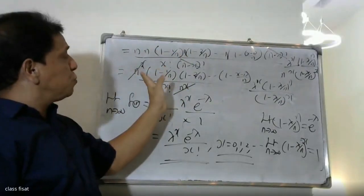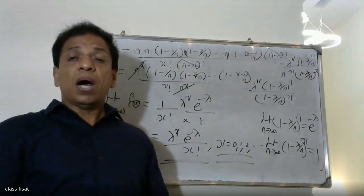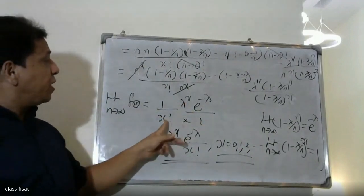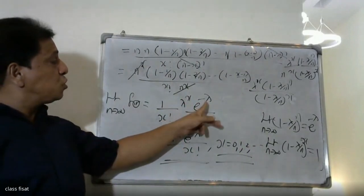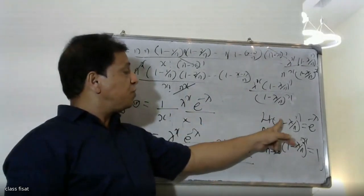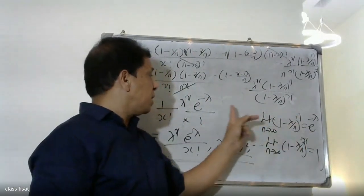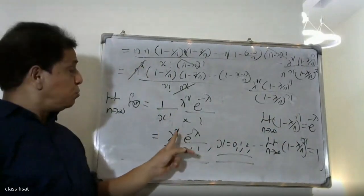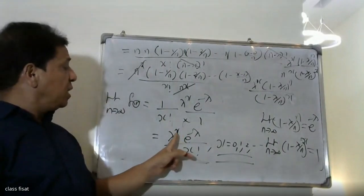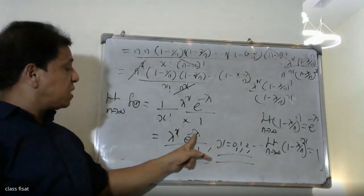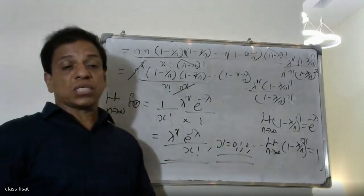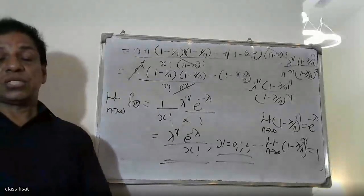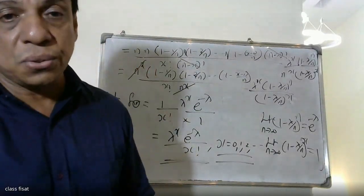Therefore the final result is: lambda raise to x times e raise to minus lambda divided by x factorial. This is the Poisson distribution function. This is the answer.